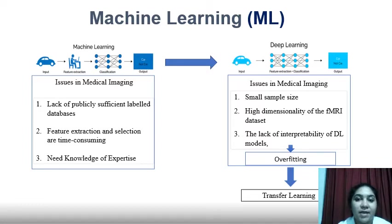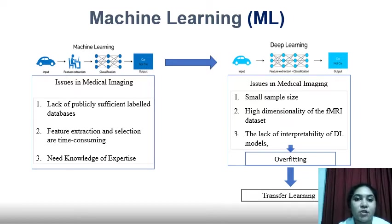Deep learning also has some problems in medical imaging. One is the small sample size of medical images, which causes deep learning models to suffer from overfitting. Overfitting models memorize noise and fit too closely to the training set, so the resulting model is unable to generalize well to new data. To overcome that, transfer learning was introduced.